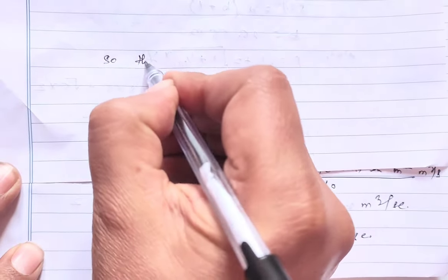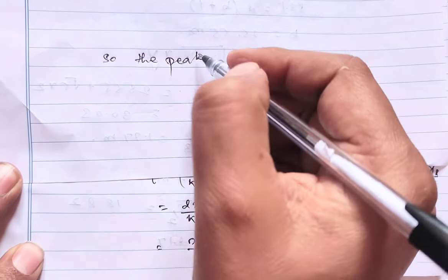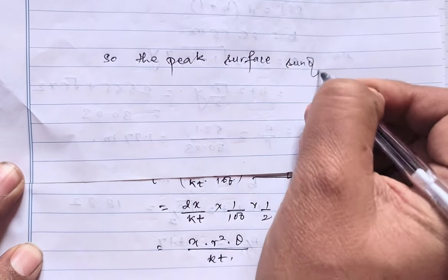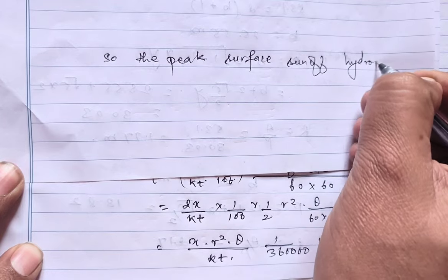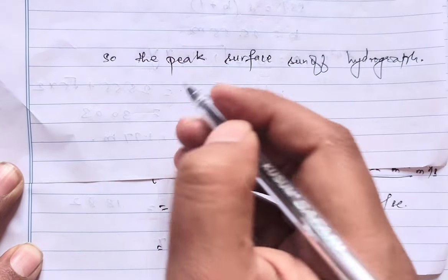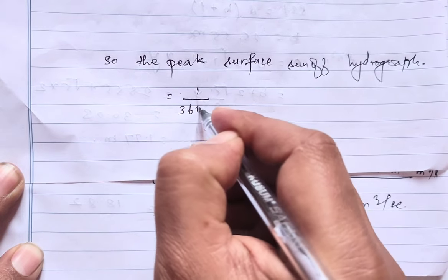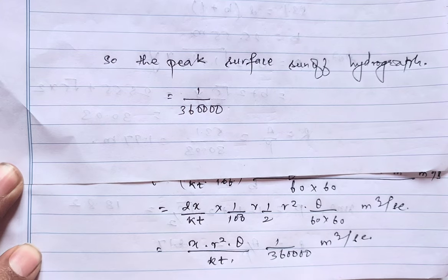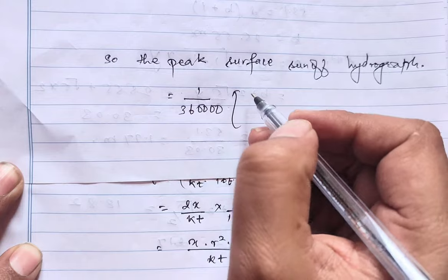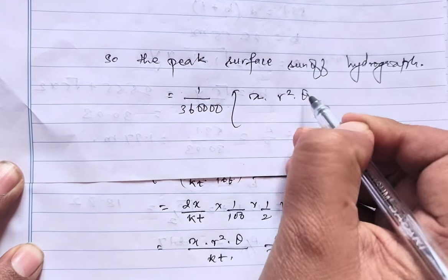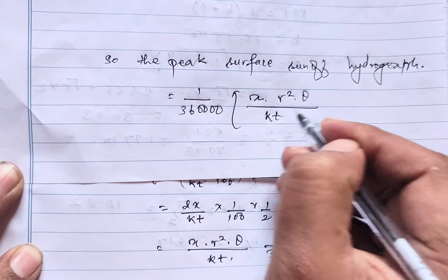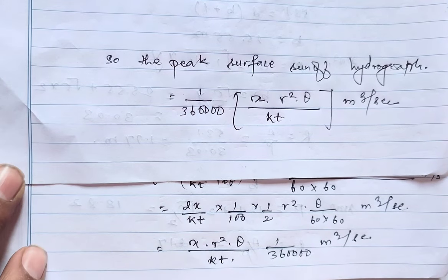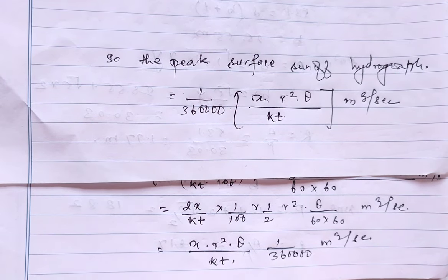So the peak surface runoff hydrograph equals, in answer, x × r² × θ divided by 36,000 kt meter cube per second is the final required result for the given data.